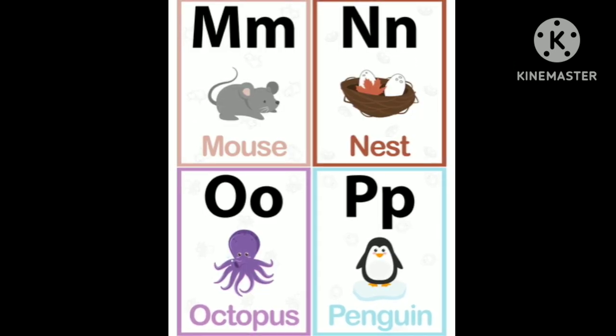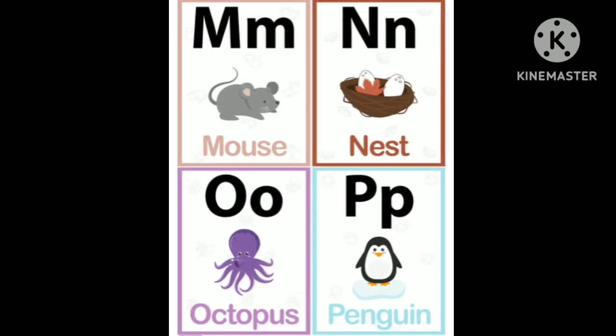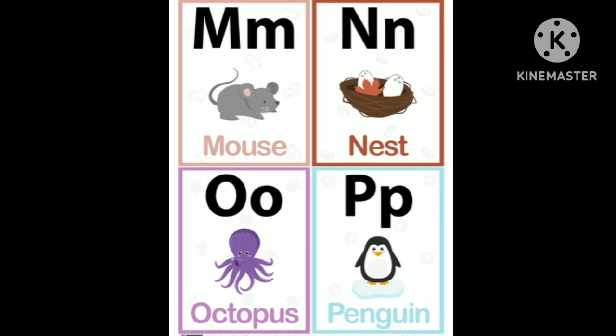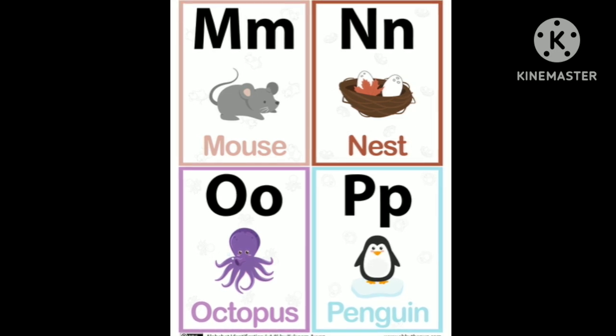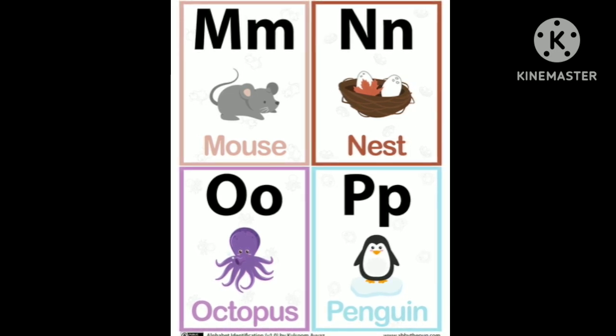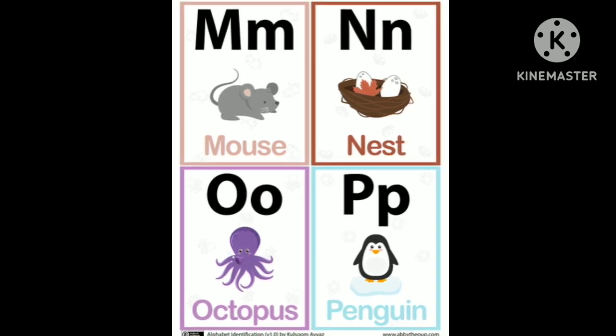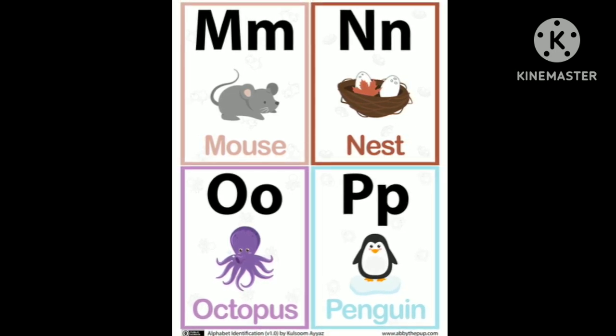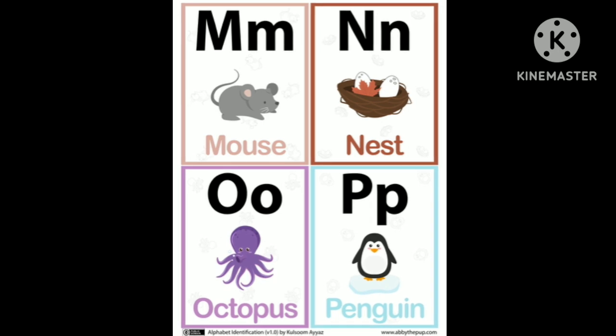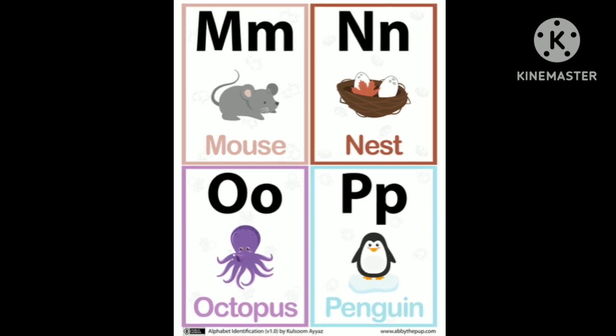M is for mouse, N is for nest, O is for octopus,